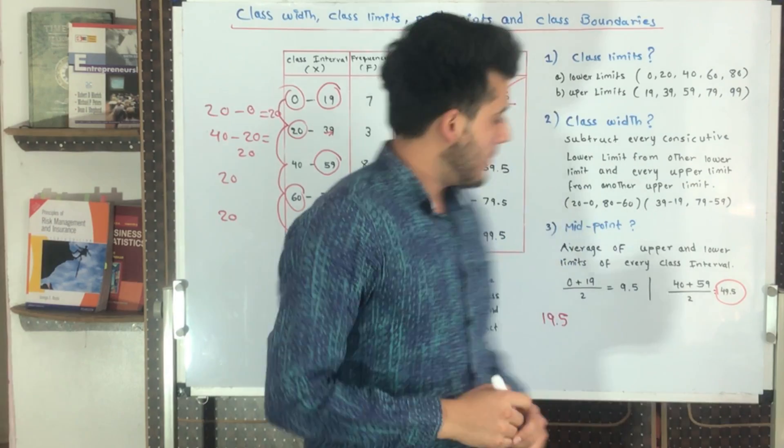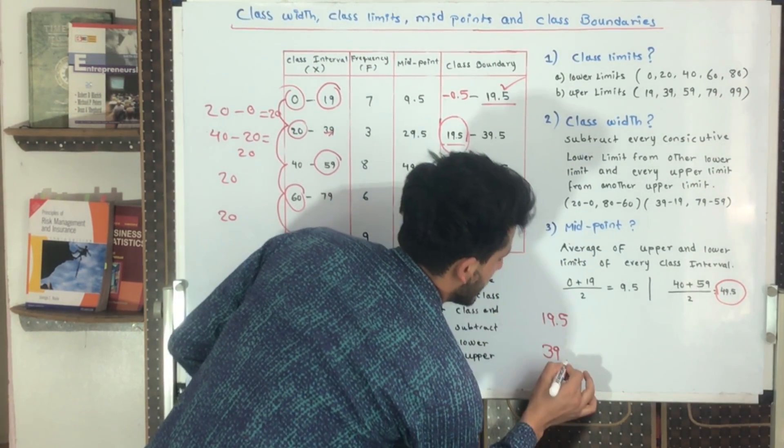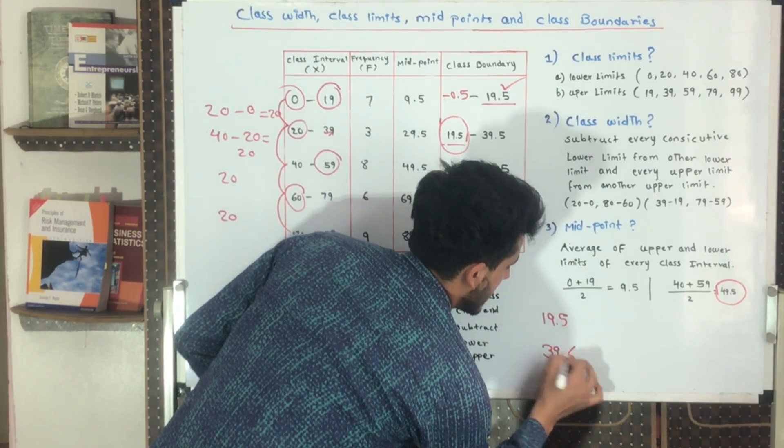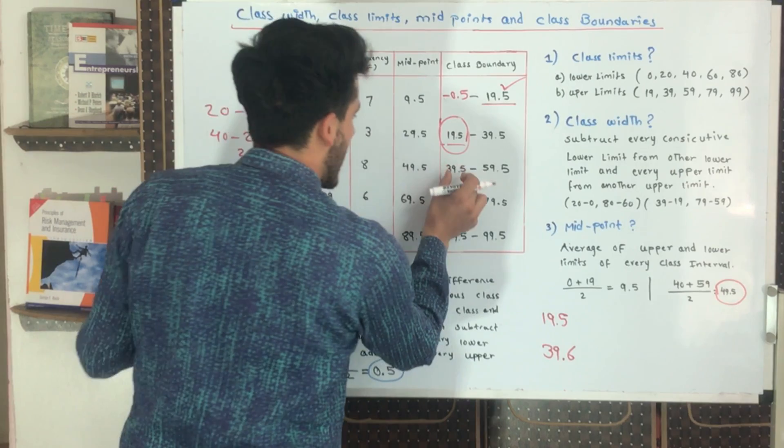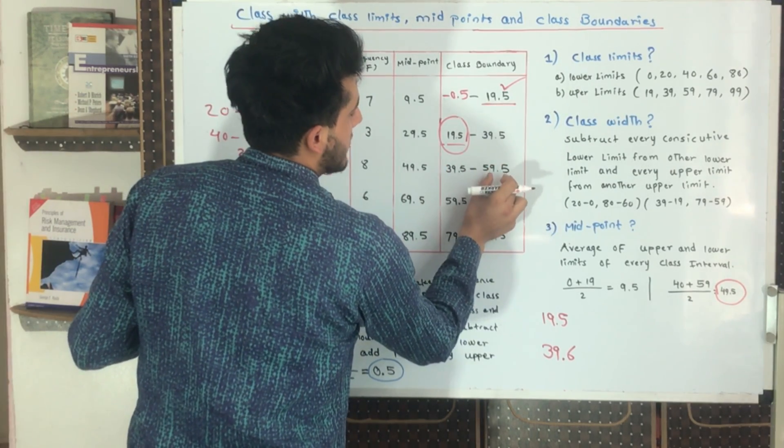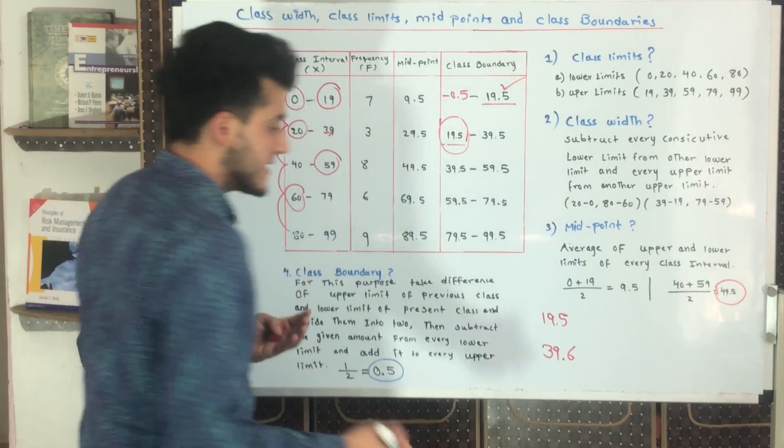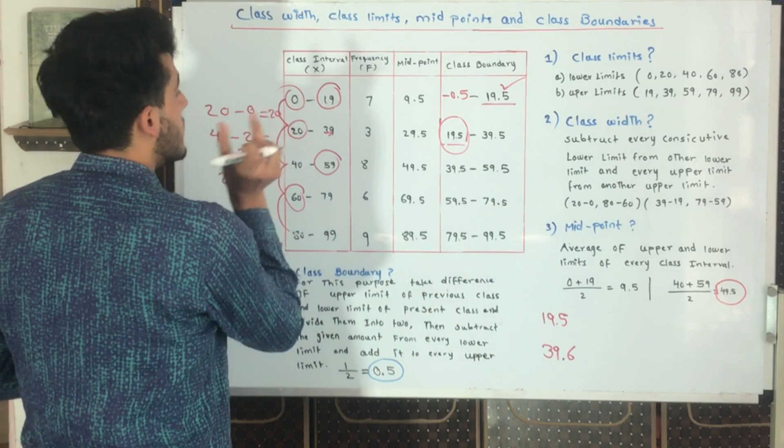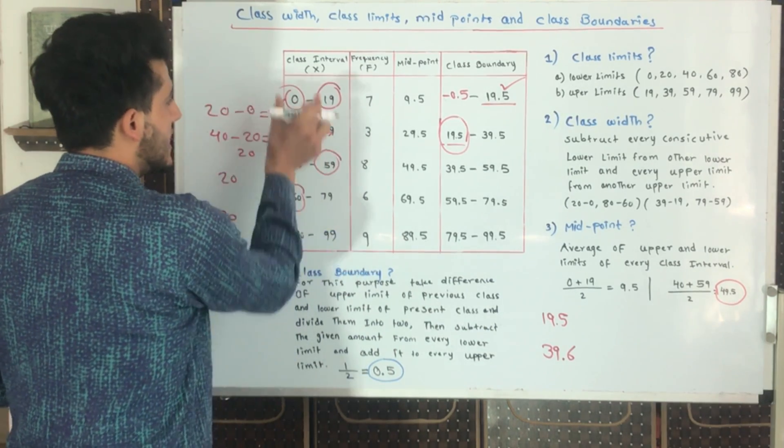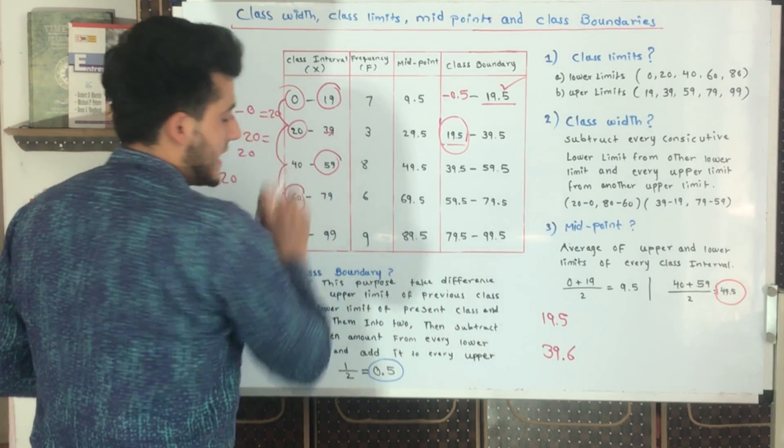By this way, if we have 39.6, where should we include this? We have 39.5 to 59.5, so it will be includable in this class interval. Otherwise, if this number was coming earlier, we were not able to include it in this class interval because we did not have that availability.